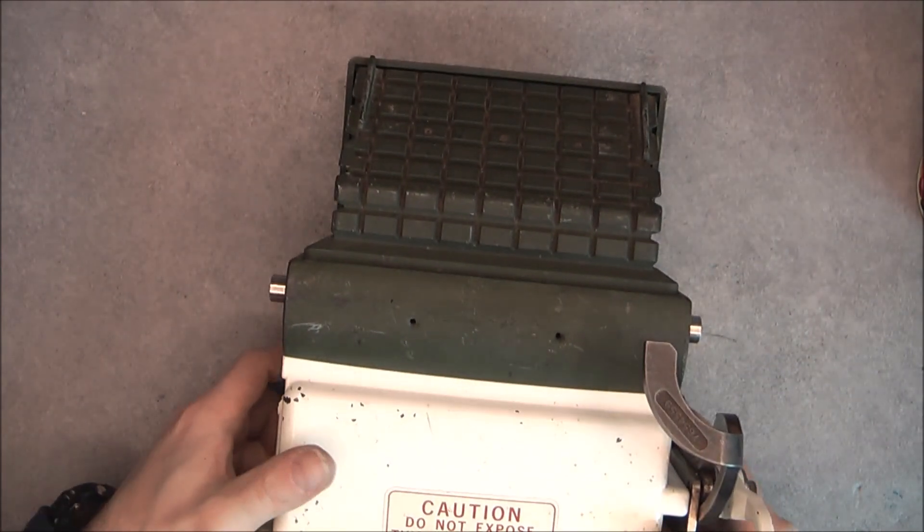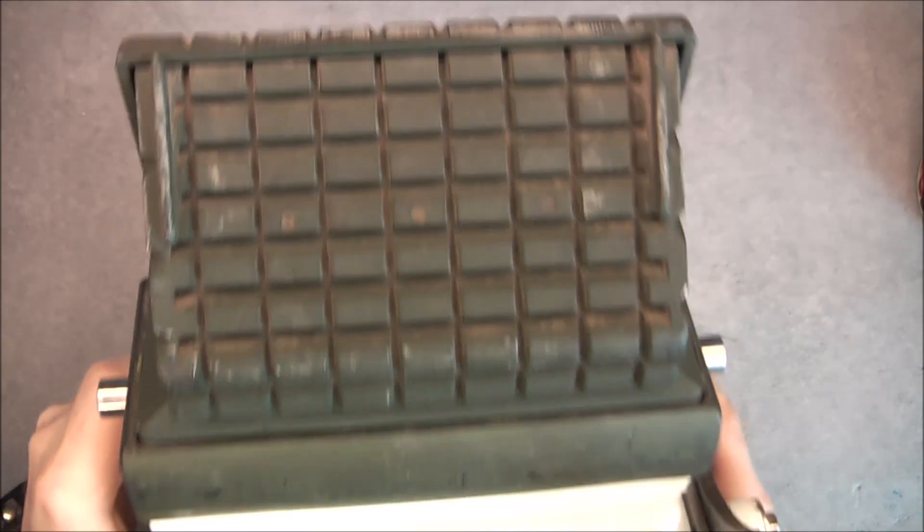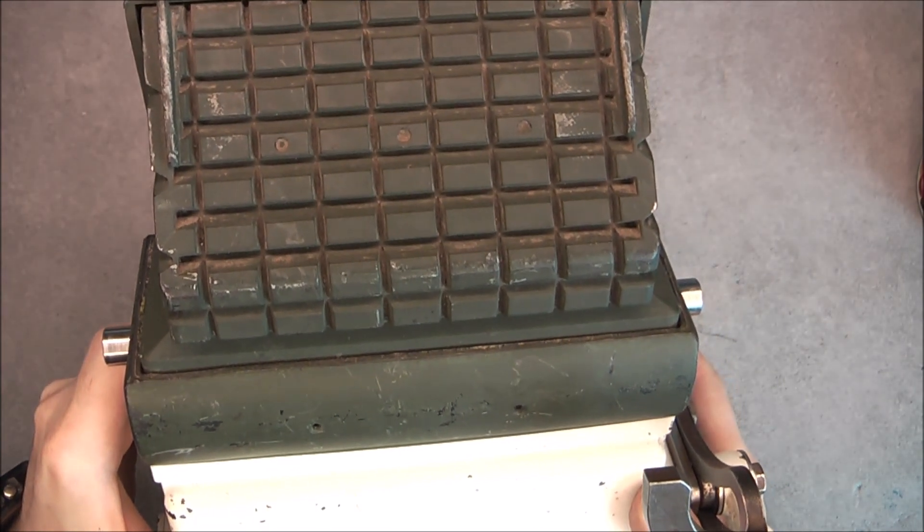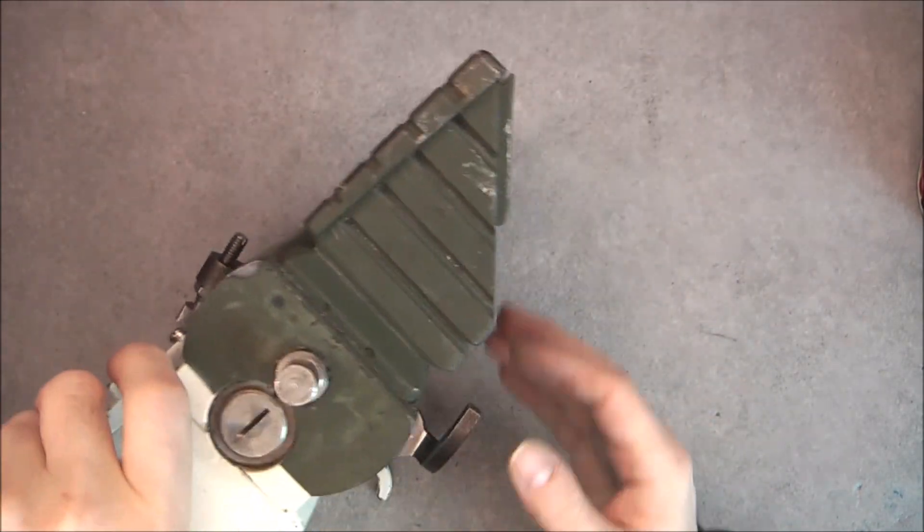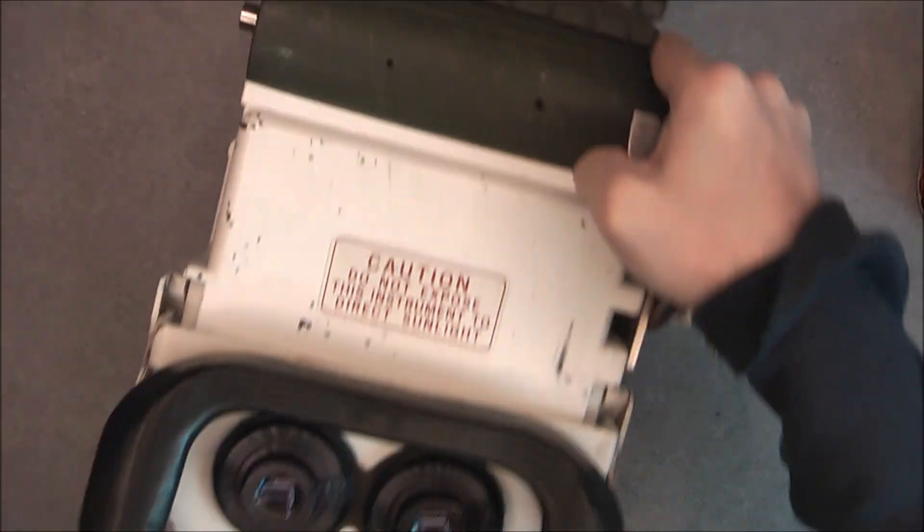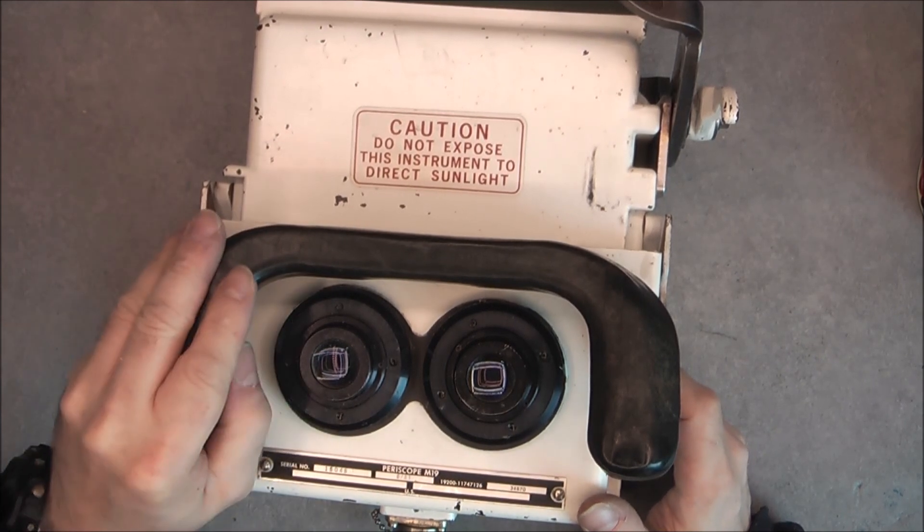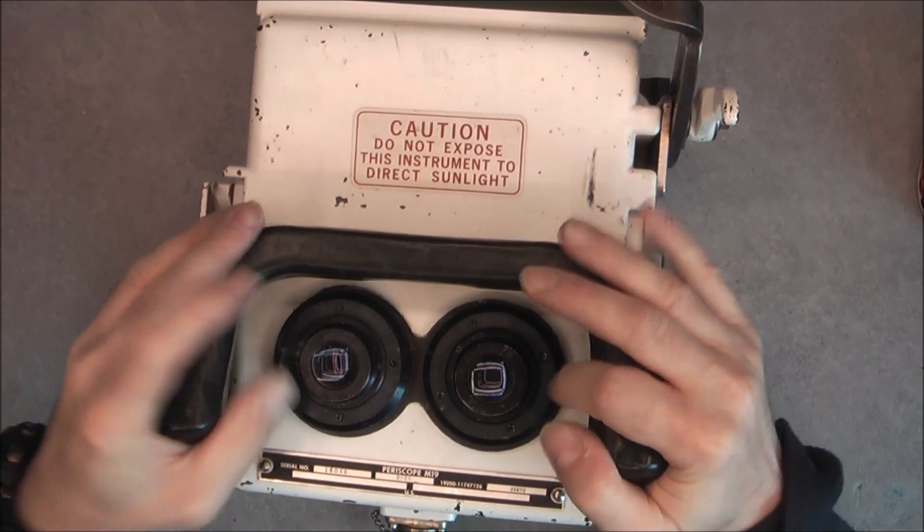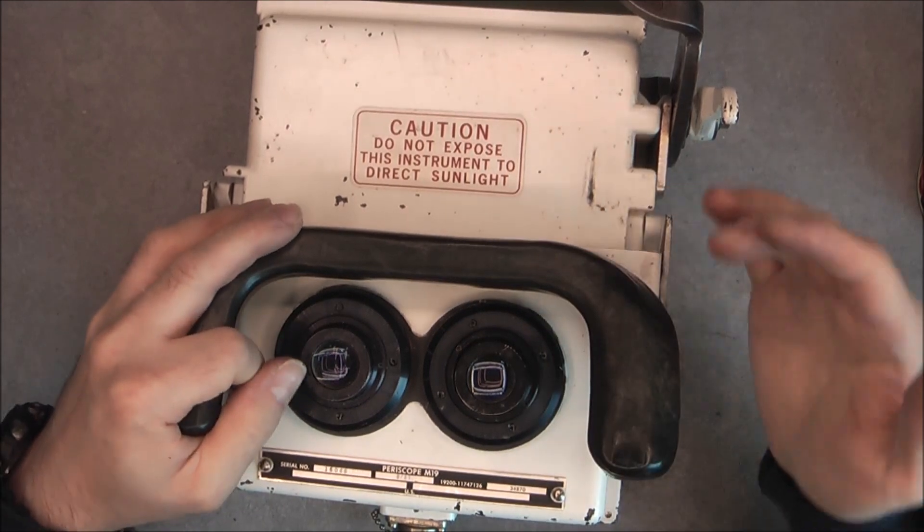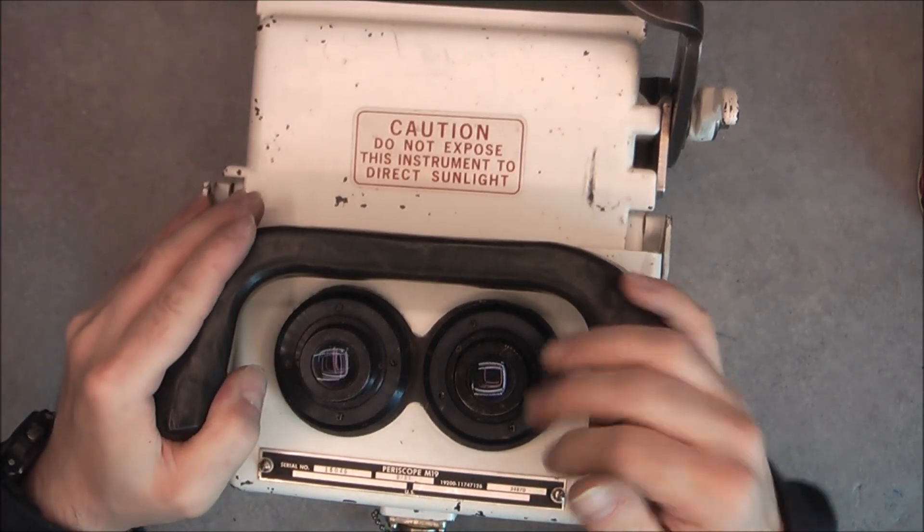So it is obviously a battle tank night vision periscope with this armoured prism assembly on the top. As you can see, eyepieces here with probably some missing rubber and forehead shock absorber thing here, in good condition this one.